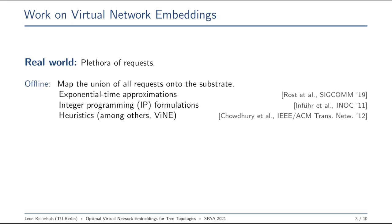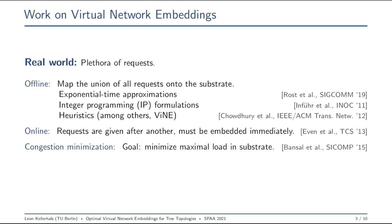Of course, usually you don't know about all of your requests beforehand, but usually you're more in an online setting. Requests are given one after another and they must be embedded into the substrate at the very moment. Here Even and others provide a way on how to do this given an algorithm for the offline variant and prove a nice competitive ratio. To mention something even more relevant for today's data centers, we may look at the work of Bansal and others on congestion minimization, where you want to map the request such that the maximal load in the whole substrate is minimized. Of course there are many more flavors of virtual network embeddings and variants, but in the end all of them have one thing in common: to provide some algorithm, you first need to be able to map a single request onto your substrate in some efficient manner.